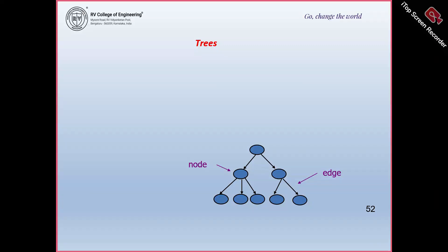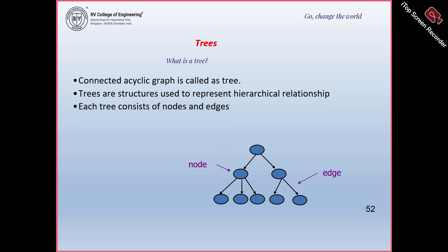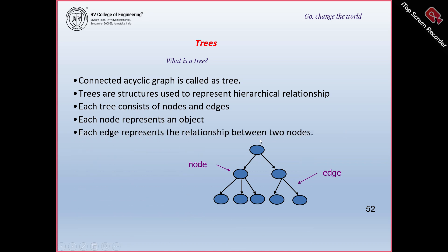A type of tree called spanning tree and counting on the trees. First, coming to the definition of what is a tree: a connected acyclic graph is called a tree. Tree structures are used to represent hierarchical relationships. Each tree consists of nodes and edges. The circles are called nodes and the edges go from top to bottom. These nodes represent objects and the edges represent the relationship between two nodes.